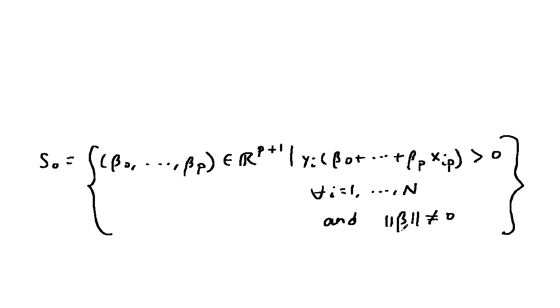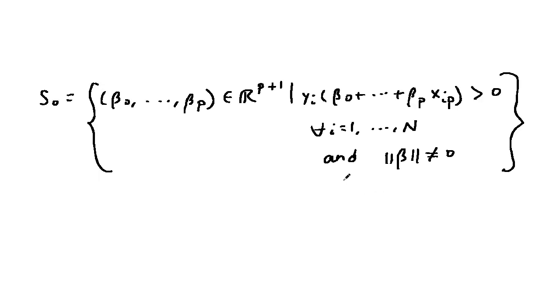But not only that, the norm of beta is non-zero. S should actually be the set s0 since we don't want the norm of beta to be 0.